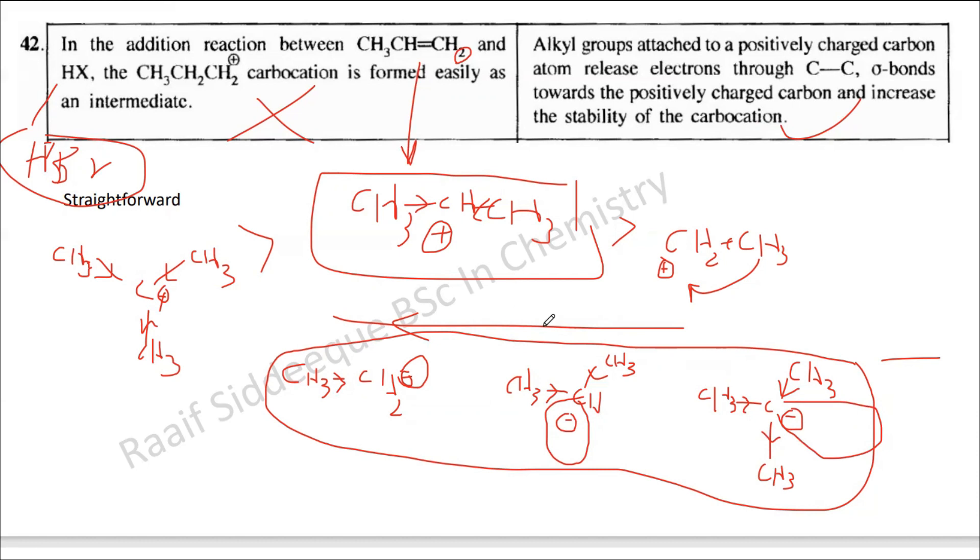To increase stability, always remember electrons should delocalize and charge should be minimized. The negative pushing of electrons minimizes the positive charge in carbocations, but here electron pushing increases the negative charge on the carbanion. More alkyl groups make the carbanion more unstable, so here stability increases in the opposite direction compared to carbocations. Don't forget these things.